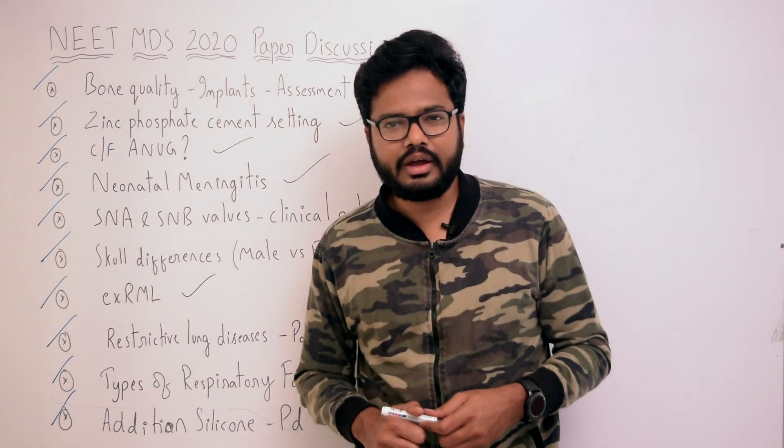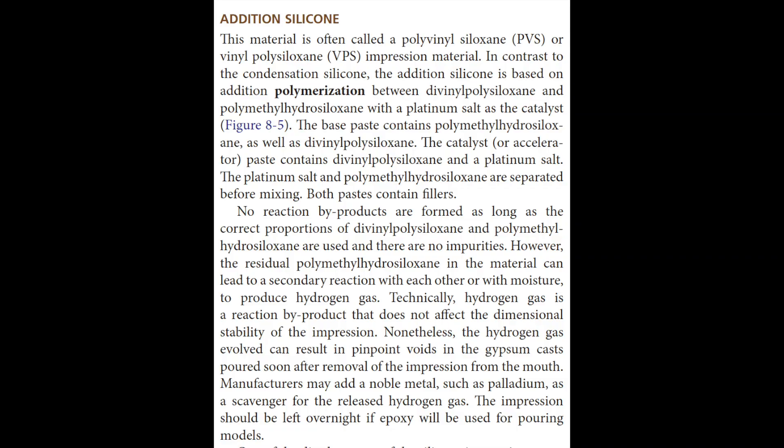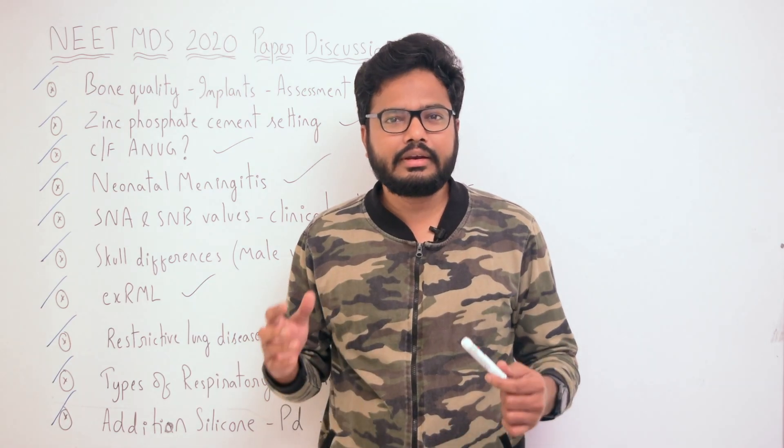The final topic: what if palladium is not added to addition silicone? Addition silicone, also called polyvinyl siloxane or vinyl polysiloxane, is based on addition polymerization between divinyl polysiloxane and polymethyl hydrosiloxane. Residual polymethyl hydrosiloxane can produce hydrogen gas, which can result in pinpoint voids in gypsum casts poured soon after impression removal. Manufacturers add a noble metal such as palladium, which acts as a scavenger for the released hydrogen gas.